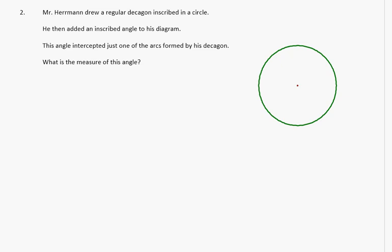Mr. Herman drew a regular decagon inscribed in a circle. He then added an inscribed angle to his diagram. The angle intercepted just one of the arcs formed by his decagon. What is the measure of the angle?